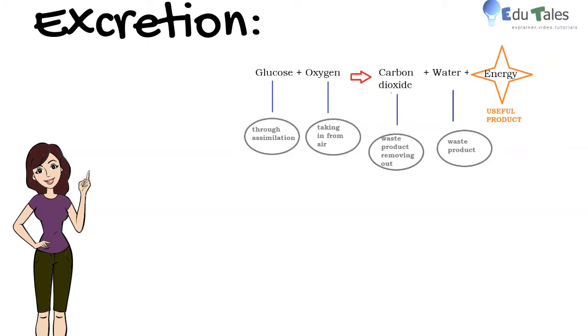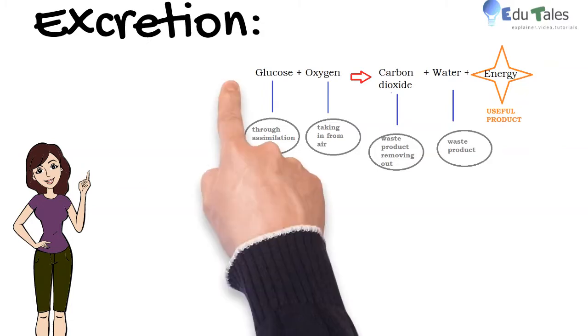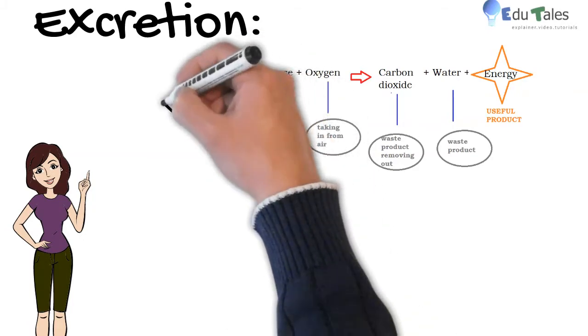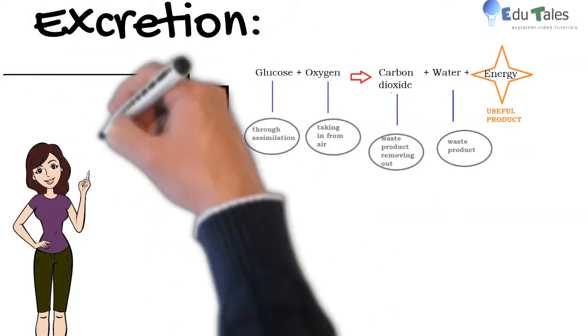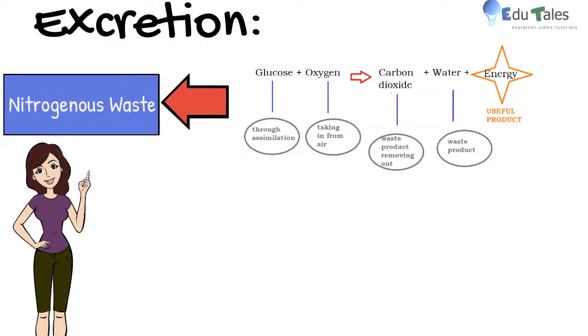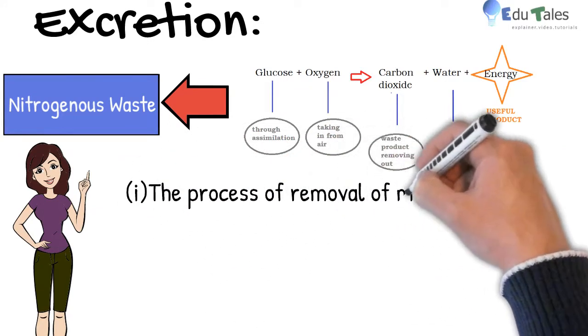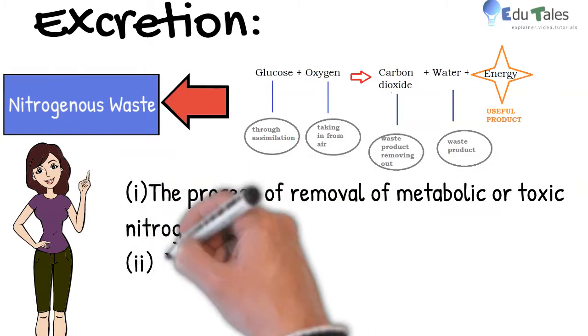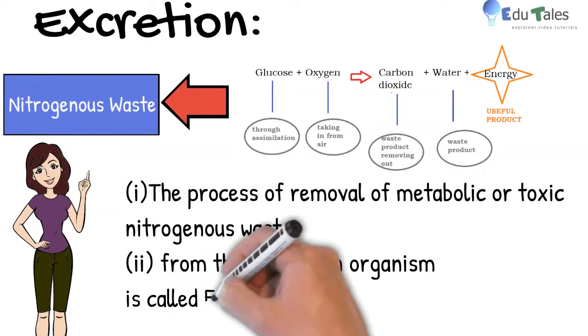What do you mean by excretion? As we can recall, various biochemical reactions occur in the cells of our body. For example, glucose plus oxygen will release carbon dioxide plus water and energy. But these reactions may produce toxic wastes in the body. These toxic wastes may be nitrogenous waste. So now, the process of removal of these metabolic or toxic nitrogenous waste from the body of an organism is called excretion.